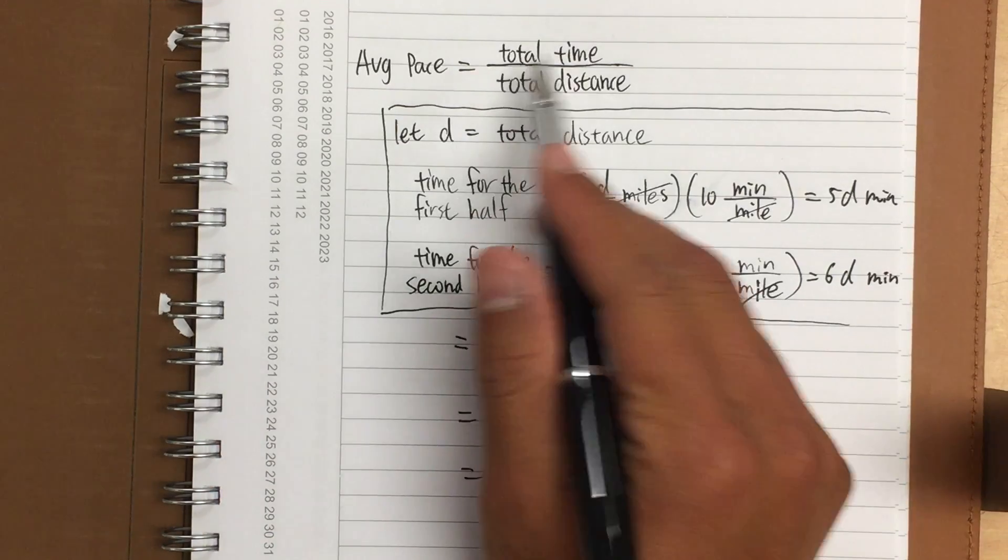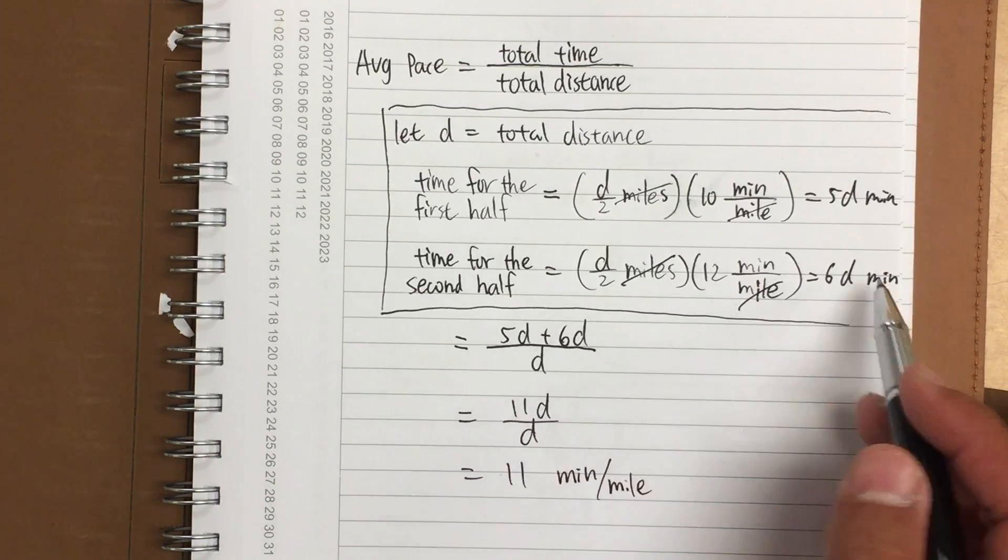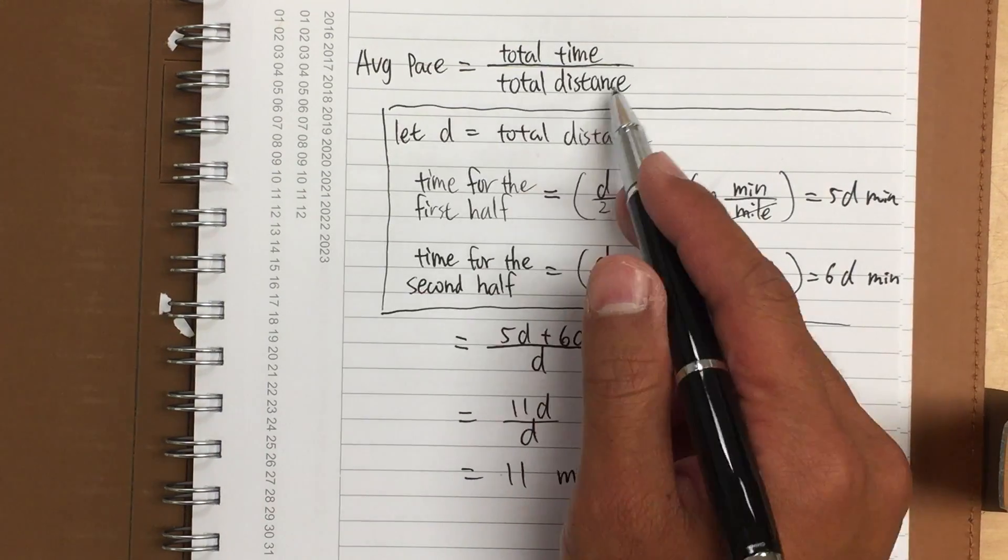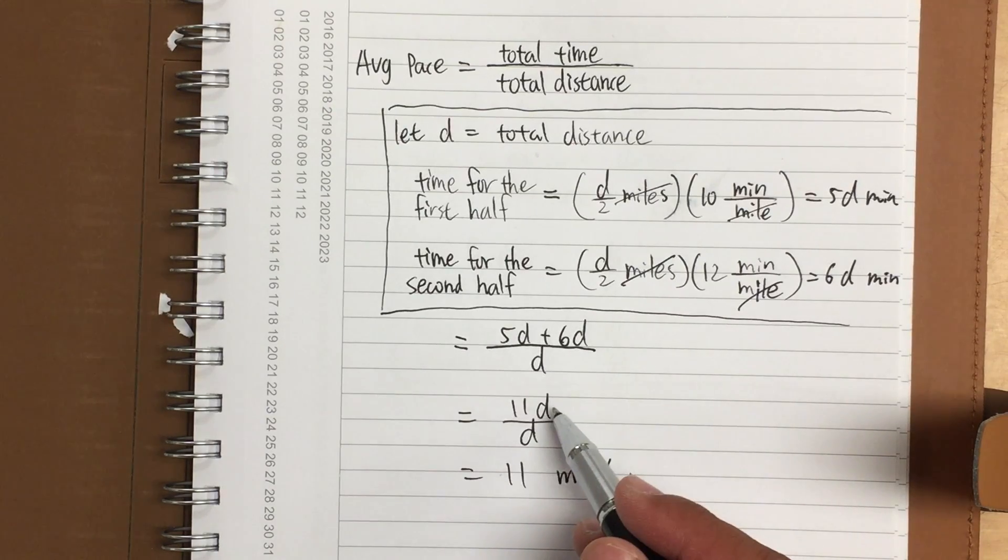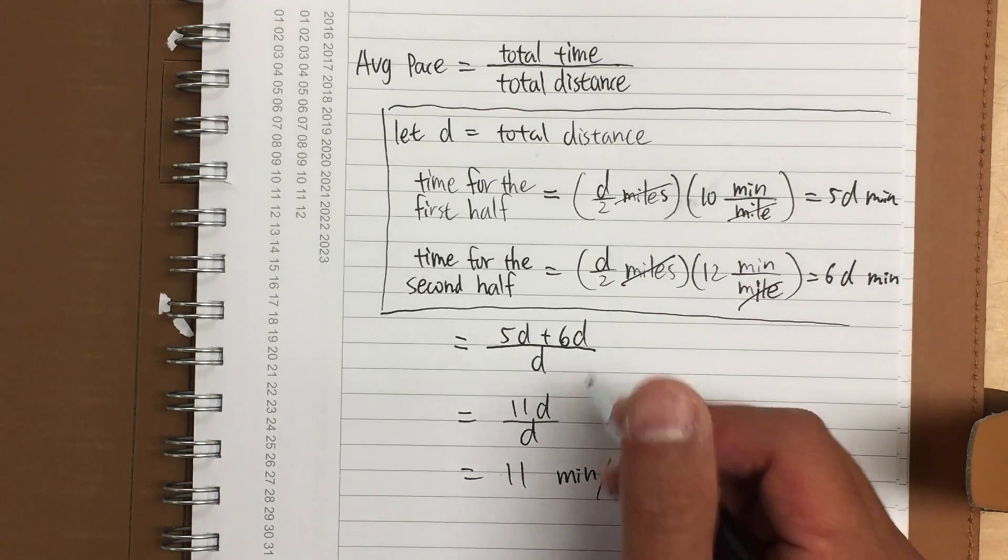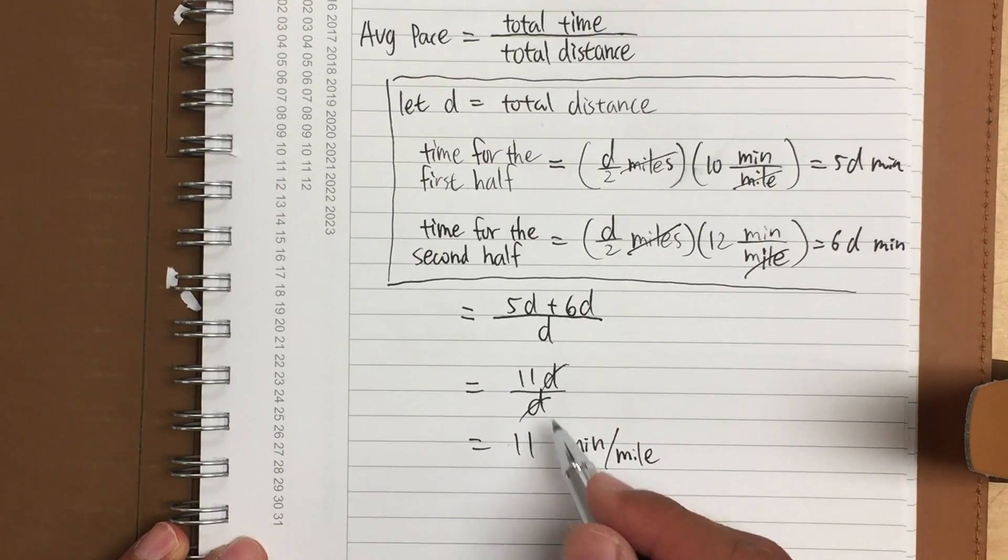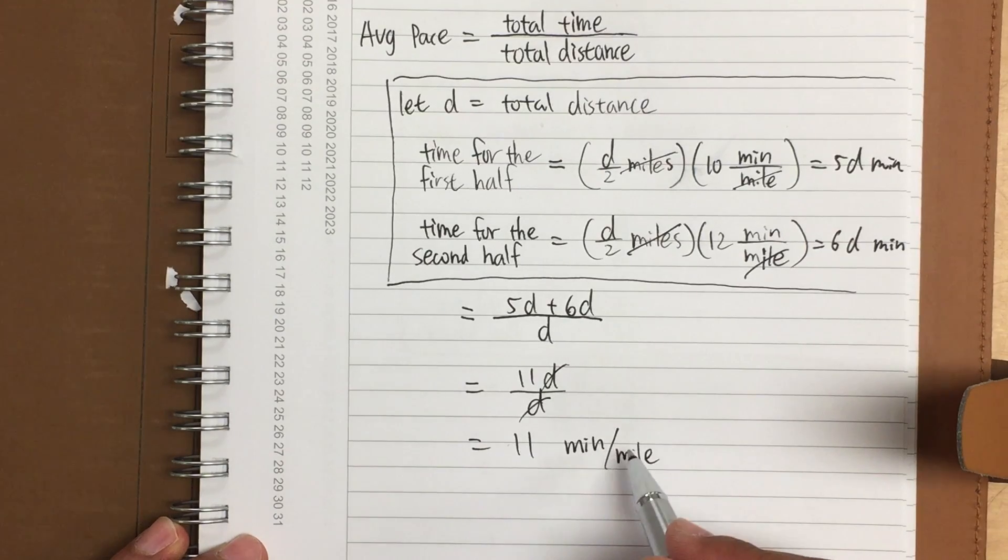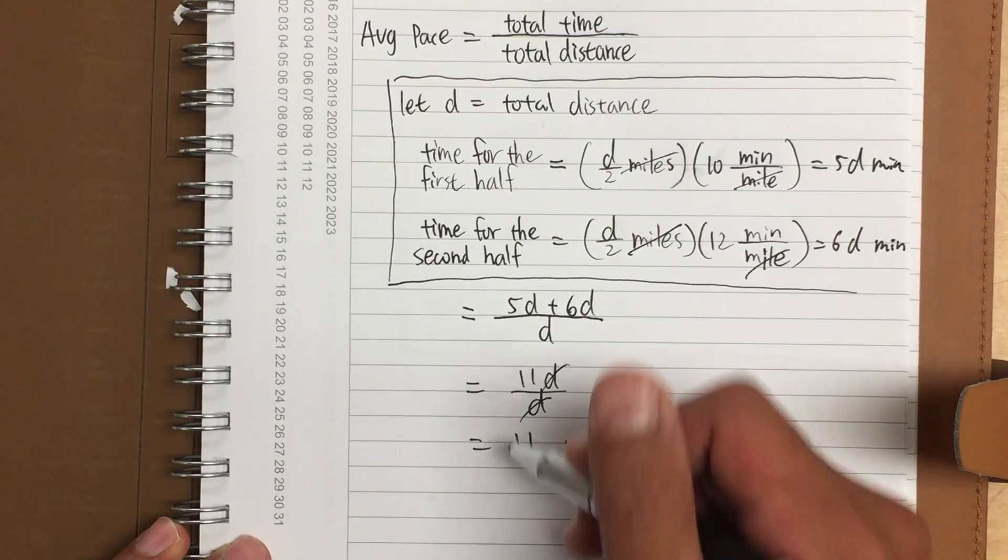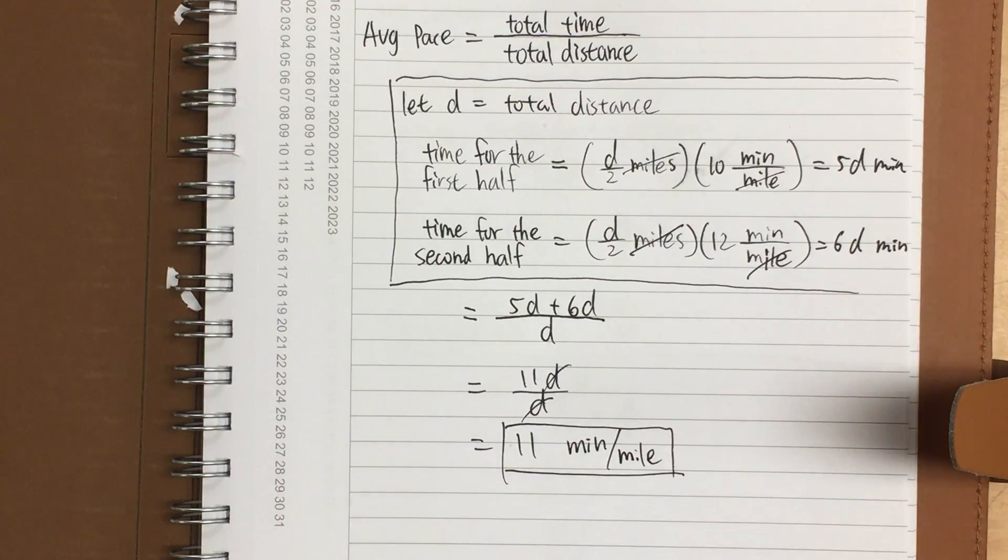And now for the total time, of course, we just need to add these two together. So that's what I have right here, 5d plus 6d over the total distance, which is d. 5d plus 6d, of course, is 11d, and we still divide this by d. And you see, d and d cancel, so at the end, we have 11. And this is the final average pace. So it will be 11 minutes per mile. This is it. So this is just like the usual average, no problem with that.